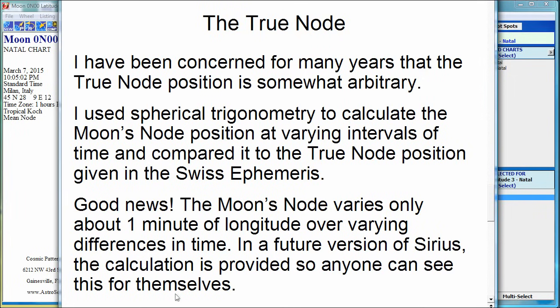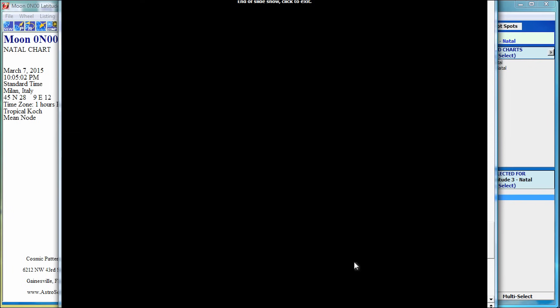Hallelujah — I got good news when I did this. The Moon's node varies only about one minute of longitude, usually much less than that, over varying distances of time. I put the program code that I wrote into a future version of Sirius and provided a menu item to get to it, just in case somebody wants to play around with that and verify it or see it for themselves. The Moon's true node is stable — and that's good.